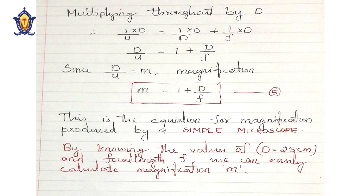So students, this is the derivation of magnification produced by a simple microscope. Remember, we used angular magnification with formula m = beta/alpha, and derived the final formula m = 1 + D/f. Hope all of you understood the topic. Stay watching and make the topics clear. Thank you.